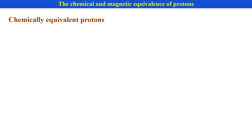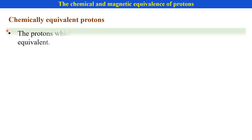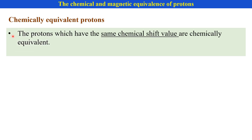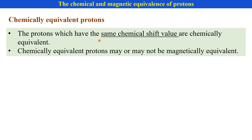First we see what is meant by chemically equivalent protons. The protons which have the same chemical shift value are known as chemically equivalent protons. Such protons have similar chemical and electronic environment. Chemically equivalent protons may or may not be magnetically equivalent.